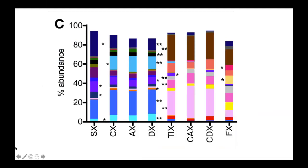Looking along the x-axis of the human study from saliva through the corpus and antrum of the stomach, duodenum (D), terminal ileum (TI), ascending colon, descending colon, to fecal sample, there's a pretty significant difference between the upper GI and the lower GI, yet within those areas it's fairly consistent. The big question is why there are such big differences between those compartments and what that tells us.